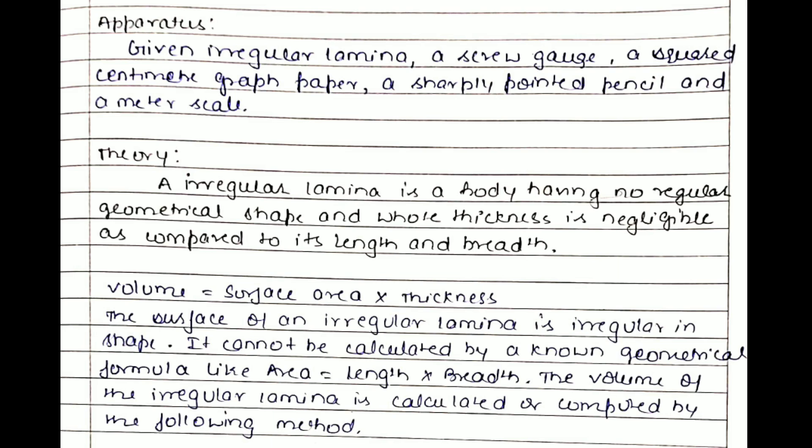The theory says that an irregular lamina is a body having no regular geometrical shape, and its whole thickness is negligible as compared to its length and breadth. The formula we are going to use is: volume equals surface area multiplied by thickness. The surface of an irregular lamina is irregular in shape and cannot be calculated by any known formula of geometry.